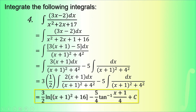The result is (3/2) ln[(x+1)² + 16] minus (5/4) arctan((x+1)/4) + C. This is our answer for the fourth example.